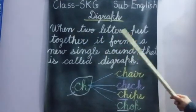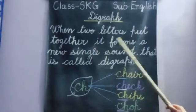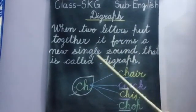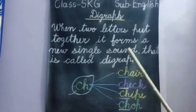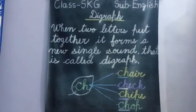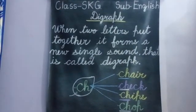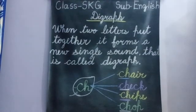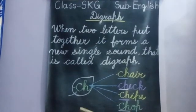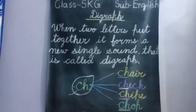When two letters are put together, they form a new single sound — that is called a digraph. Now I will teach you about the digraph ch. The letters c and h together produce the sound ch.